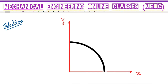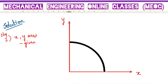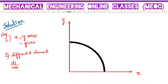The immediate next step is to identify a differential element. Step 1 is done. Step 2 is the differential element. Here the differential element will be a one-dimensional element only, because the given object is also a wire. Wire is a 1D element.